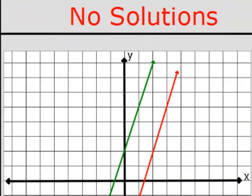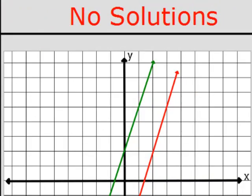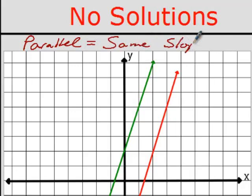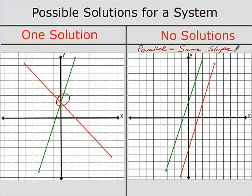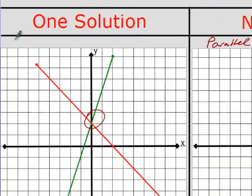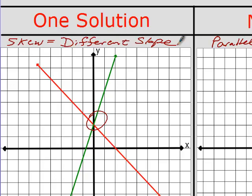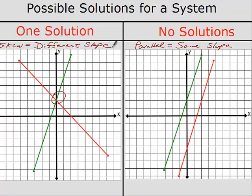We also have the option for no solution — how many times do the lines cross? Never. So what kind of lines never cross? Parallel lines. The key to parallel lines is that their slopes are the same. So if you have two equations with the same slope, how many solutions does that system have? Zero. And what causes lines to cross? When their slopes are different. If the slopes are different at all, the lines will always cross at least once because they're growing at different rates. So different slopes means one solution, same slopes means no solutions.